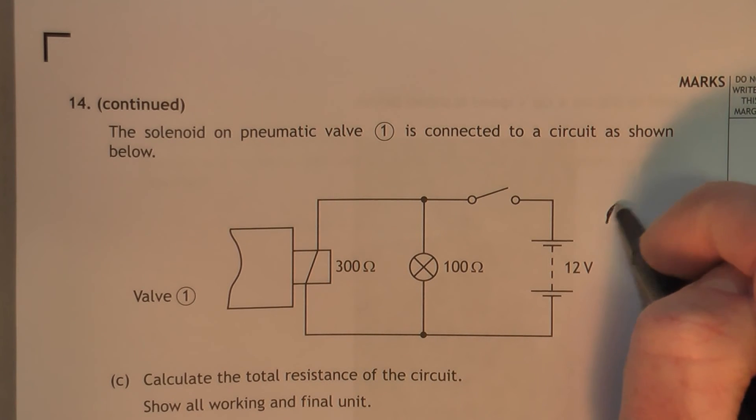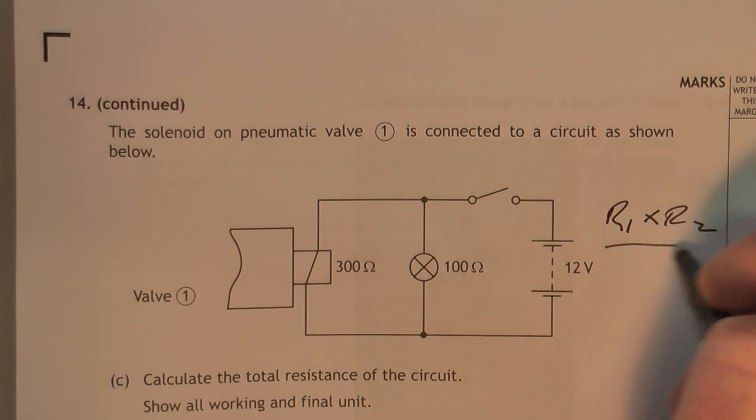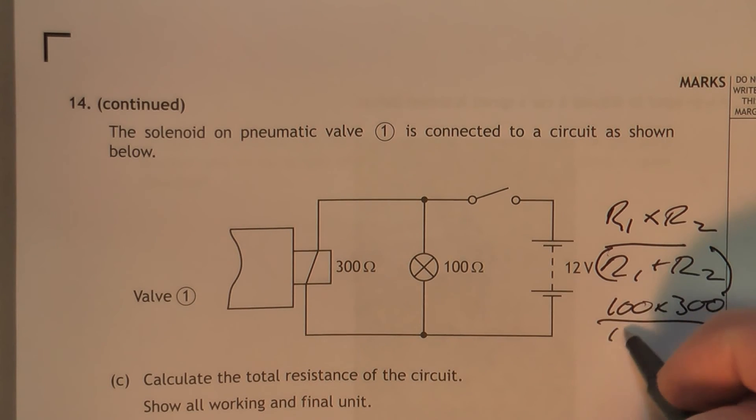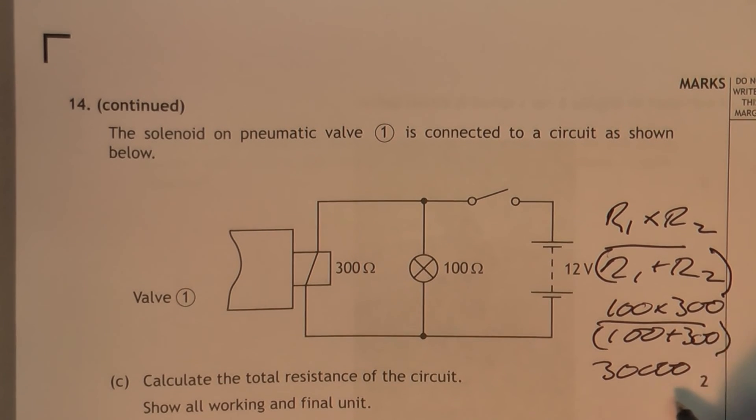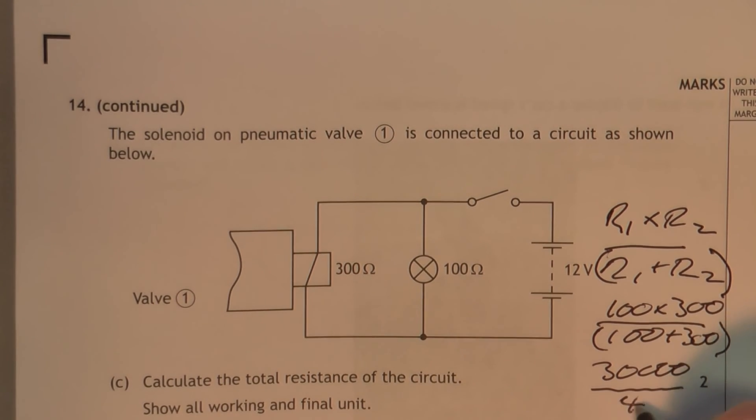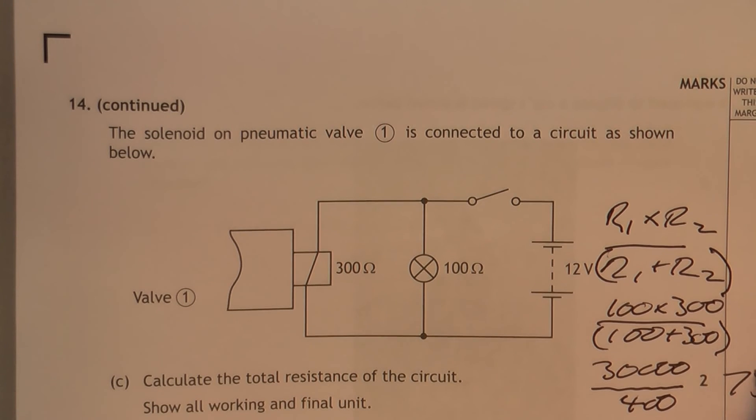So two ways of doing it. You can do R1 times R2 over R1 plus R2. Make sure you put brackets around that bit when you're doing it in the calculator. So that's 100 times 300 over 100 plus 300. So that's 30,000 over 400. That gives an answer of 75 ohms.